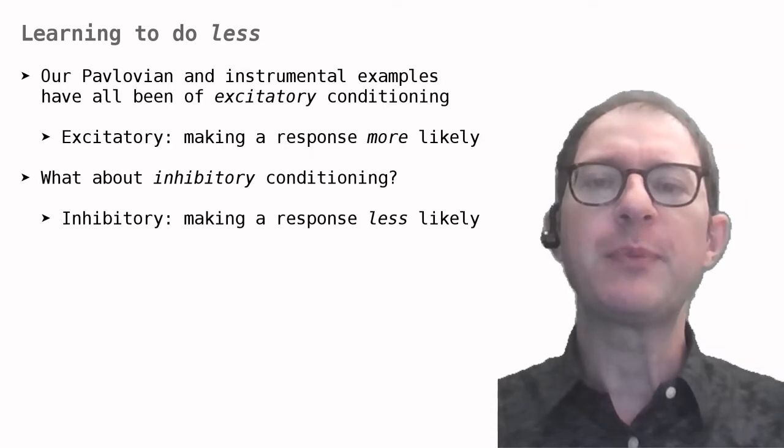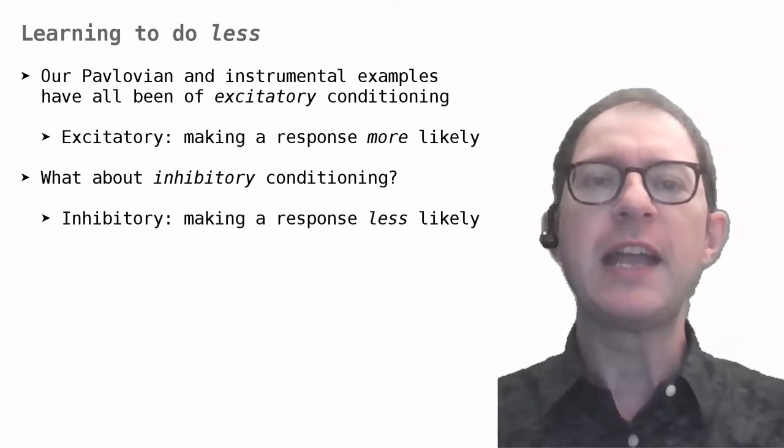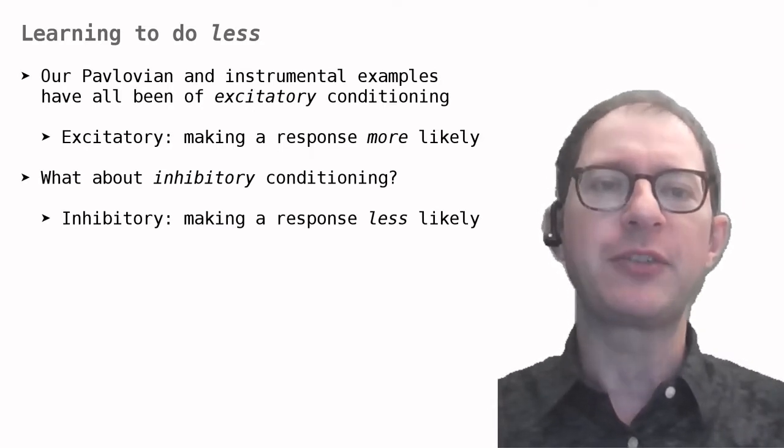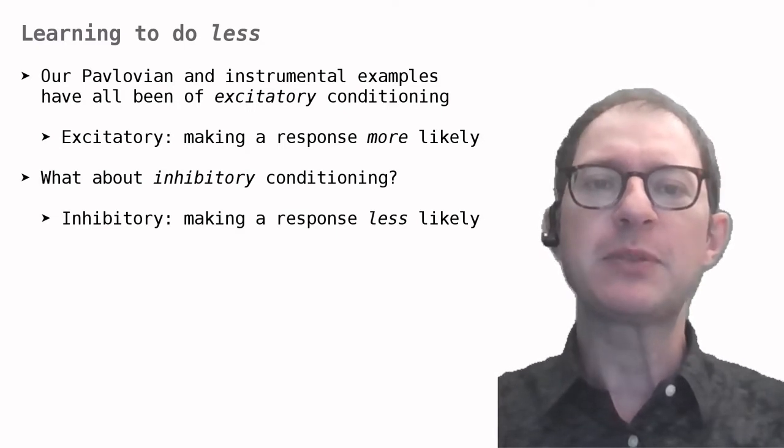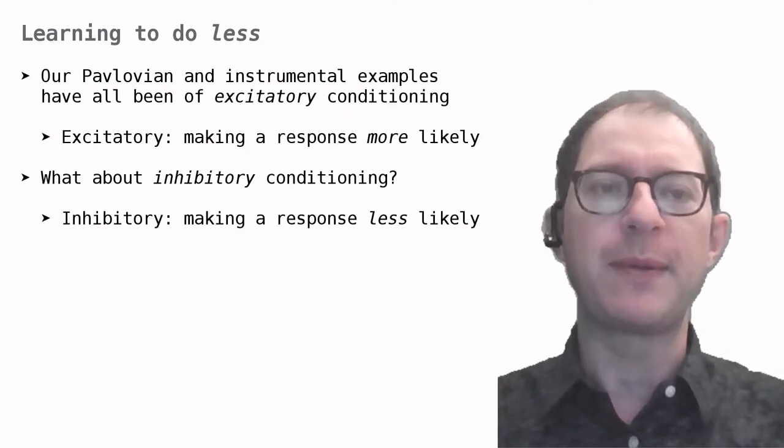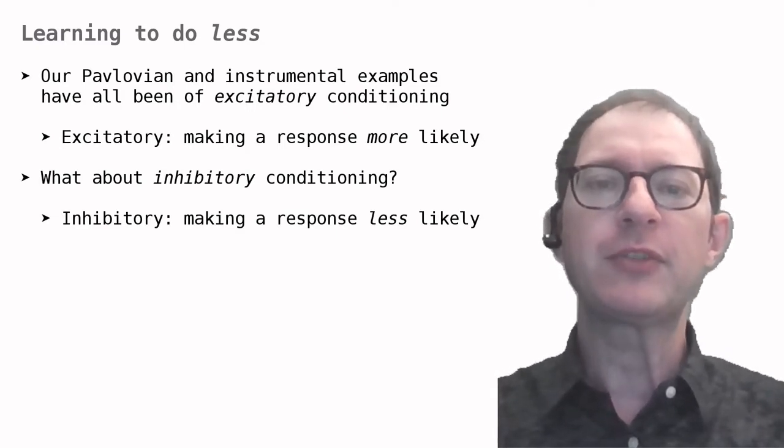The examples we have seen so far in Pavlovian and instrumental conditioning have all been examples of excitatory conditioning, that is examples where animals learn to do more of something, be it the Pavlovian conditioned response or an instrumental action. In this lesson we will look at inhibitory conditioning, that is, at conditioning that makes responding less likely.